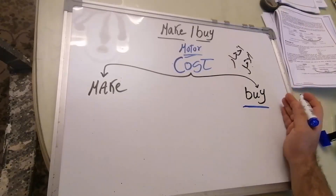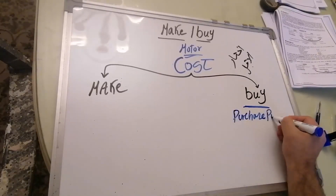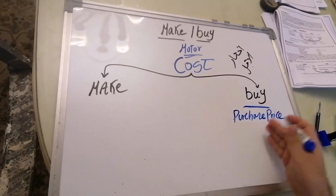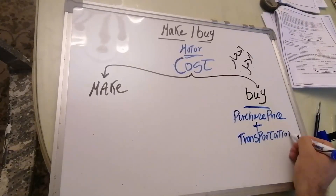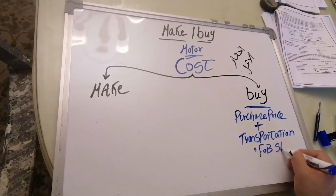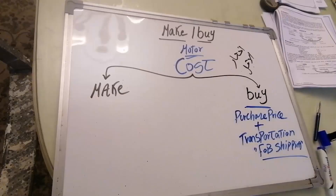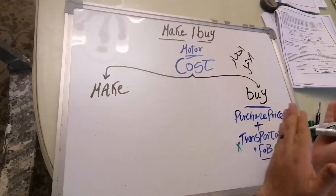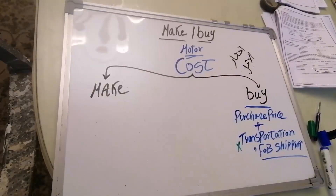The buy side has no tricks: you put the purchase price from outside plus transportation — that's if it's FOB shipping, meaning shipping terms are on the buyer, which is you. But if it's FOB destination, shipping is on the seller, so you don't include it. You may also add taxes. The key variable is transportation based on the shipping terms.